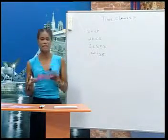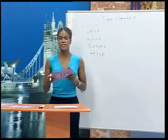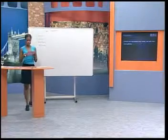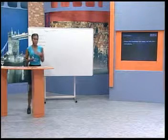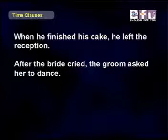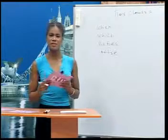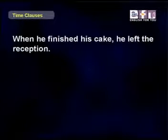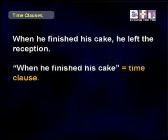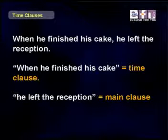Many different tenses can be used in sentences with time clauses. We will look at two types. The first is sentences where each clause has a verb in the simple past. For example: When he finished his cake, he left the reception. After the bride cried, the groom asked her to dance. It started to rain when the birthday party began. When he finished his cake is the time clause, or dependent clause. He left the reception is the main clause — it can stand by itself.